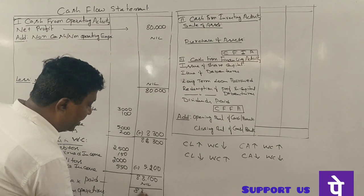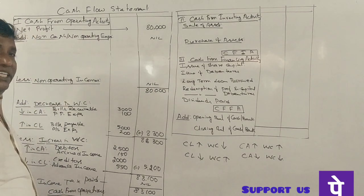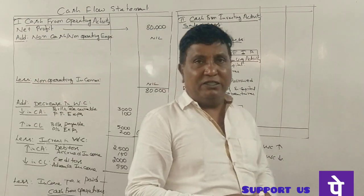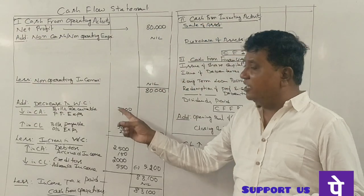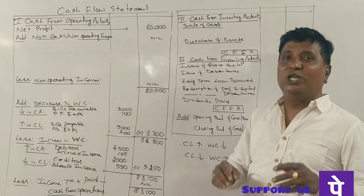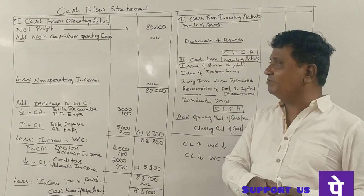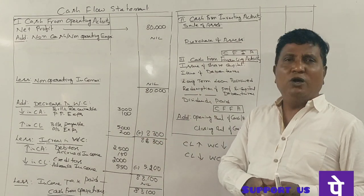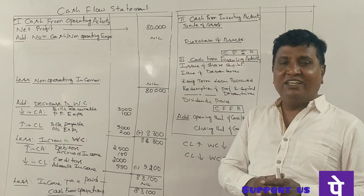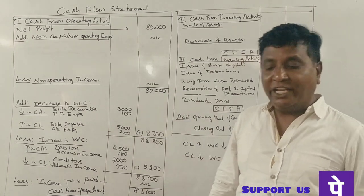8,300 rupees is the cash from operating activity — that's 6 marks from the 2019 question paper. This is simple to write out. Hope you are clear. Thank you so much.